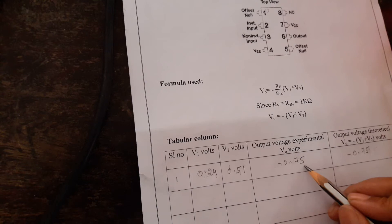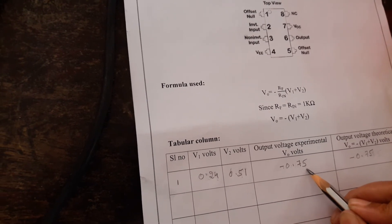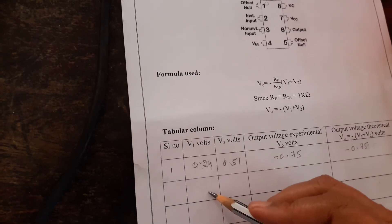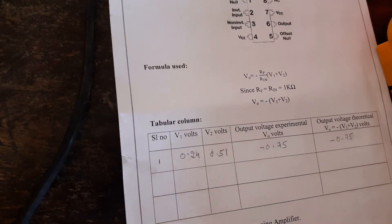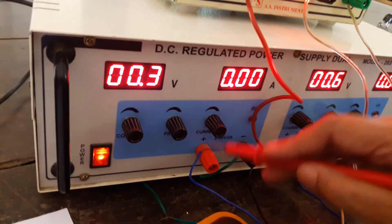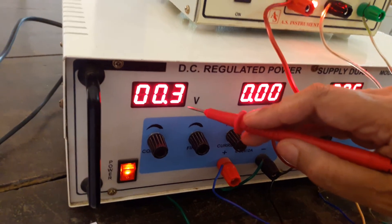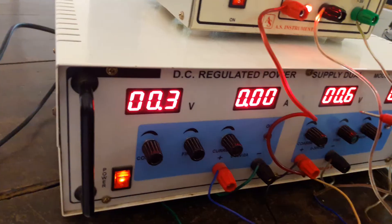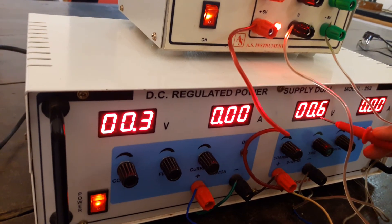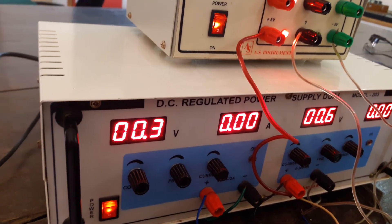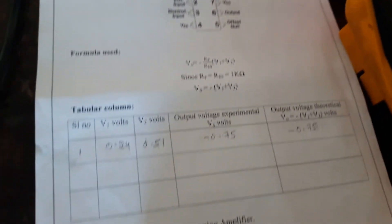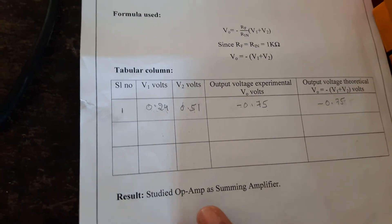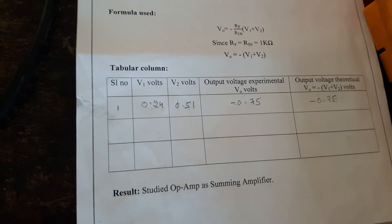Repeat the experiment for different sets of V1 and V2. For that we can keep V1 as it is and change only V2 in steps of 0.1 and tabulate the readings. Write down the result as the summing amplifier, that is op-amp as summing amplifier is studied.